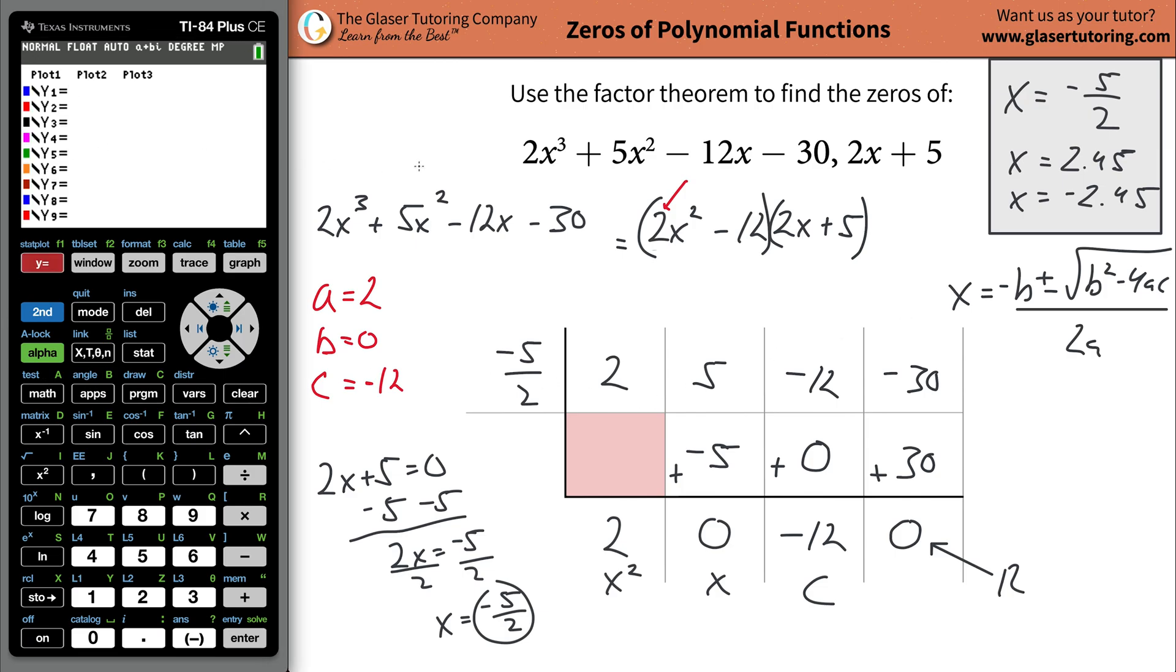Now, to see this visually, just graph the original function you had over here. So 2x cubed, 2x cubed plus 5x squared minus 12x and then minus 30. And hit graph. Look. If you notice here, the graph looks like it touches how many places? Well, if you look, you're like, wait a minute, it only crosses two times. What the hell is he talking about? Well, if we zoom in, we might be zooming in a little too much here. Yeah, we really can't tell.